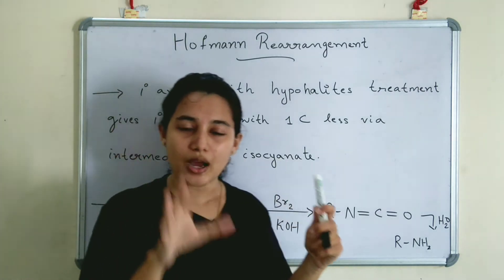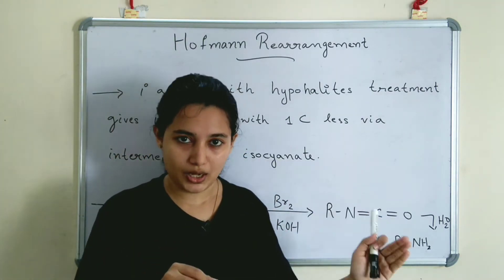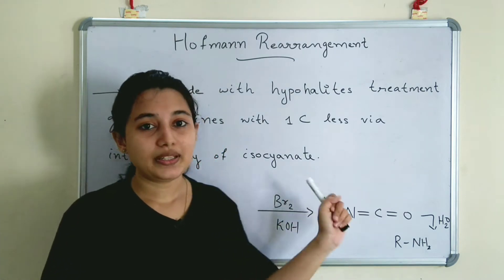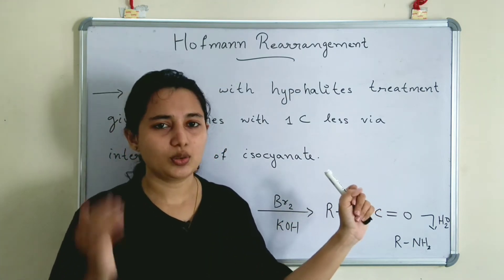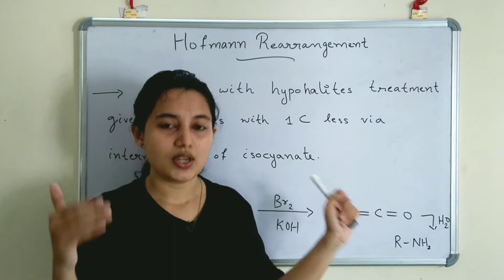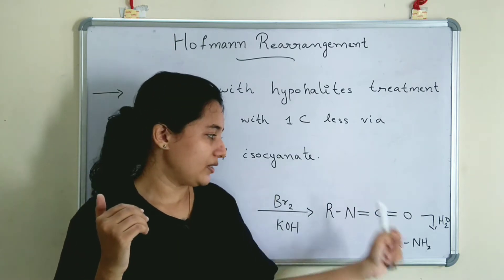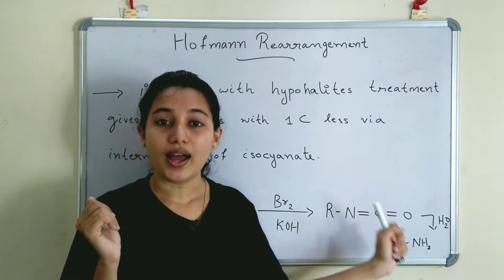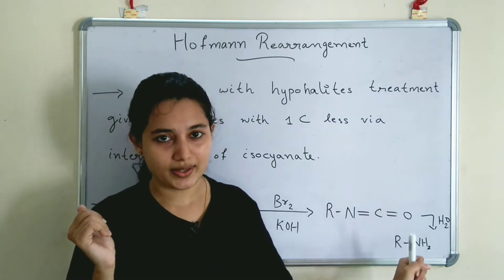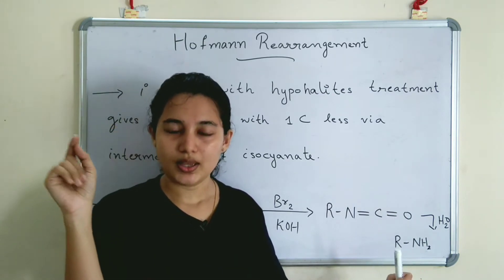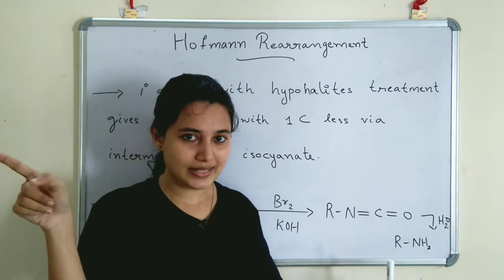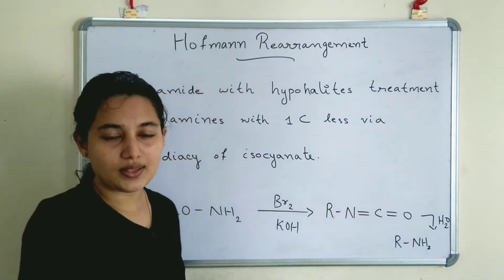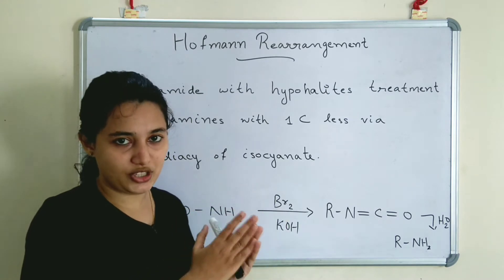So primary amide is converted to primary amine with one carbon atom less, and an intermediate is formed in the reaction. That intermediate is called isocyanate (R-N=C=O). Note that cyanate is C-N and isocyanate is N-C.